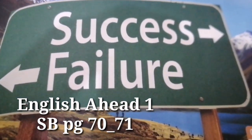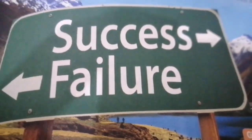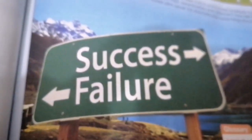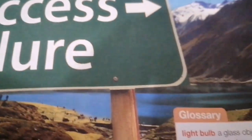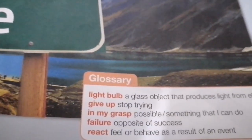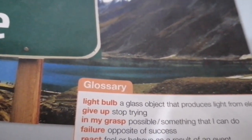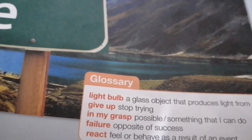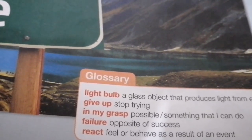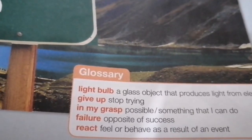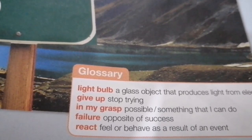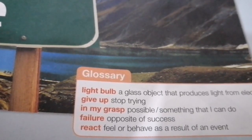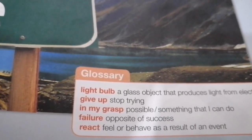Students, you can check your glossary — some new words are being explained here. 'Light bulb' is a glass object that produces light from electricity. 'Give up' means stop trying.